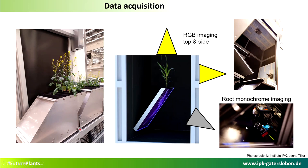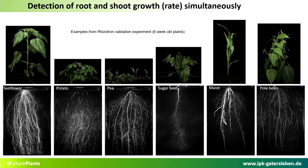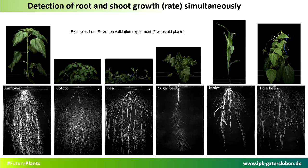The roots are detected from the lower part within the imaging tower, which also gives the opportunity to detect plant growth above soil as well as below ground. Here are examples from our risotron validation experiments — plants grown for six weeks. This gives an idea of how the root system looks for individual plants: sunflower on the left, then potato, pea, sugar beet — giving a really nice root picture — and also maize and pole bean as examples.